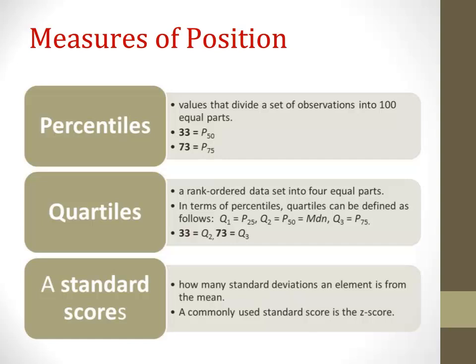Let's look at an example. Let's say we have a distribution of scores and one of our scores is 33 — the number of points an individual scores on a test. We know that this individual scored 33 points, and that 33 is equal to the 50th percentile. Looking back at the definition, if a score is at the 50th percentile, then 50% of scores are below the 50th percentile.